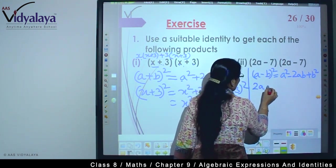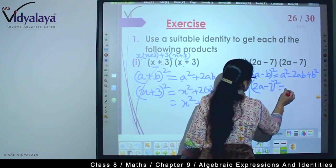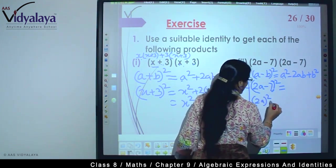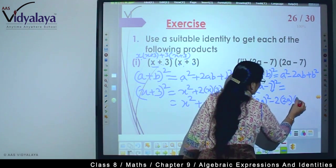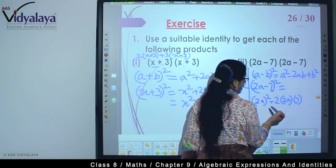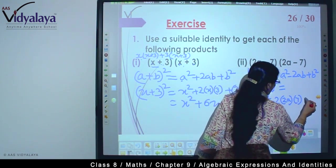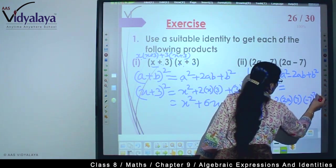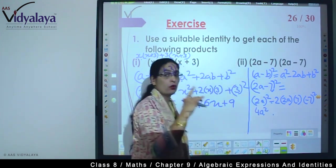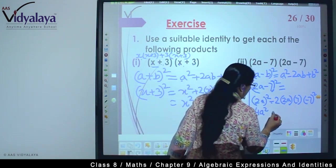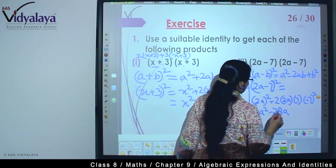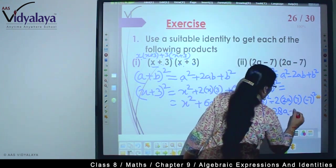So based on this, what will we do? We'll write this as (2a-7)². How to solve? a² means (2a)² minus 2×2a×7...